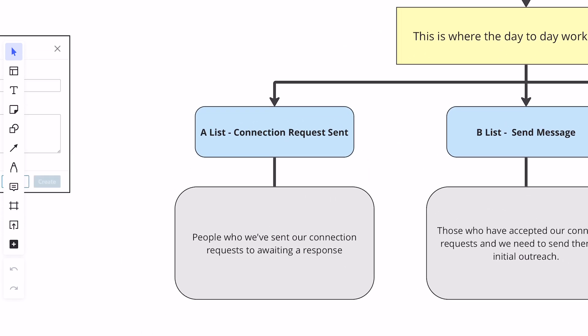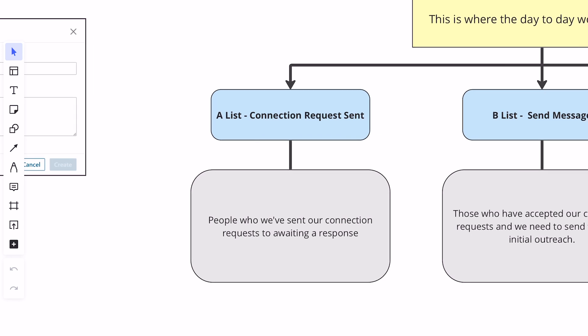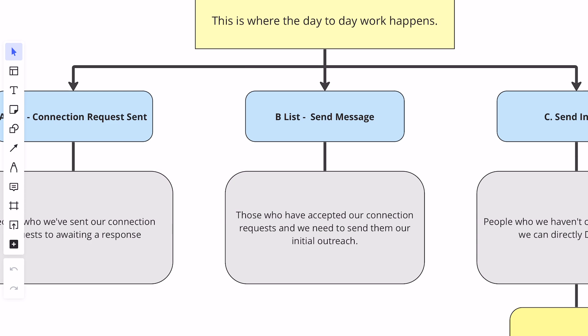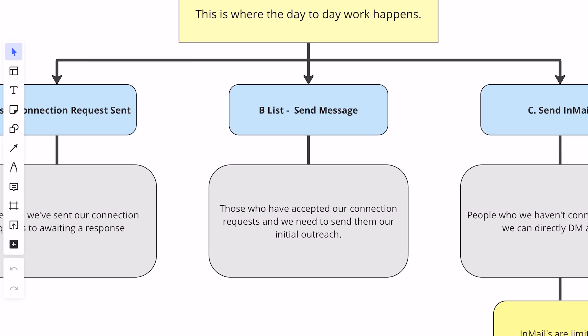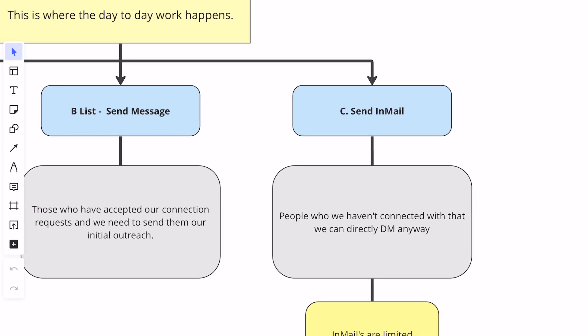The A list is going to be our connection request sent — these are people who we've sent our connection requests to but we're awaiting a response. Our B list is going to be send message — those are people who have accepted our connection requests and we need to send them our initial outreach. Our third saved list is simply going to be send in-mail: people who haven't connected with us but that we can directly DM anyway. In-mails are limited, so we can't send an infinite amount, but you get a certain number of credits with Sales Navigator.